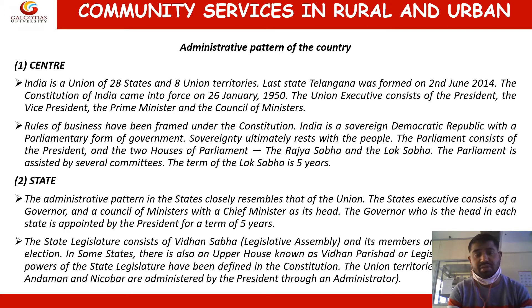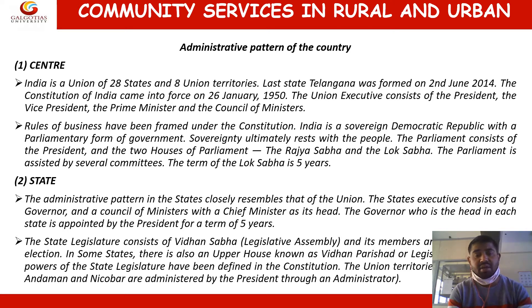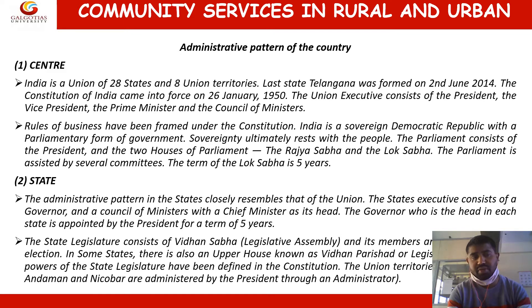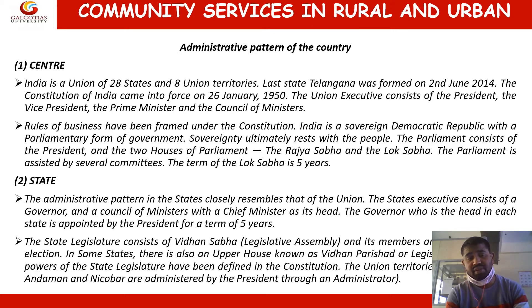The state administrative pattern closely resembles that of the union. Each state has an elected Chief Minister and other ministers at the state level. The Governor, who is the head of each state, is appointed by the President for a term of five years. The state legislature consists of the Vidhan Sabha, with elected members. Some states also have an upper house known as the Vidhan Parishad. Union territories are administered by the President of India through an administrator.